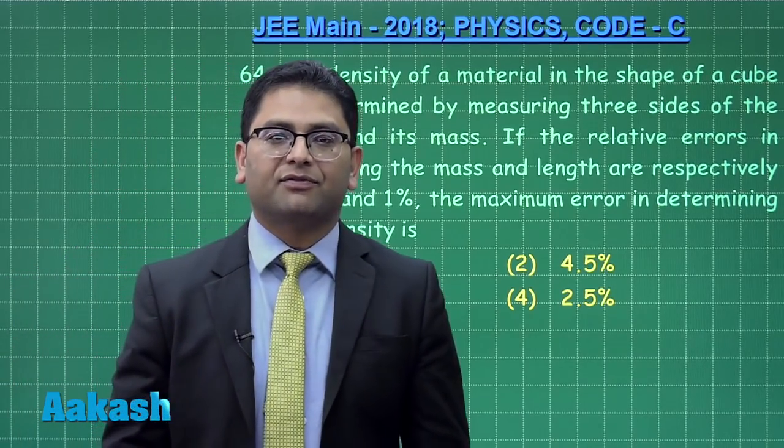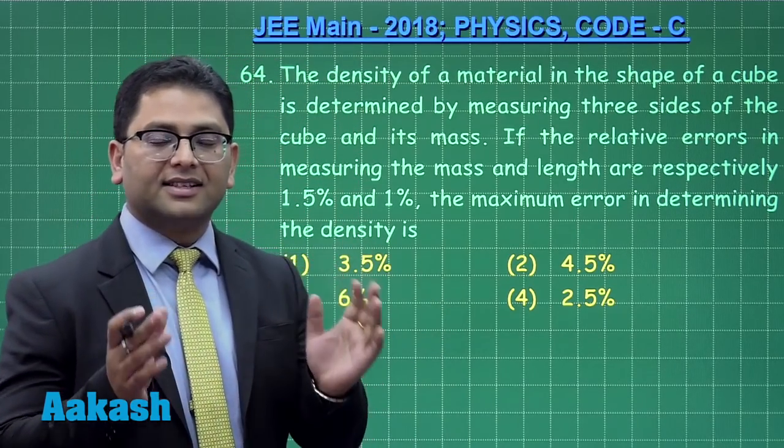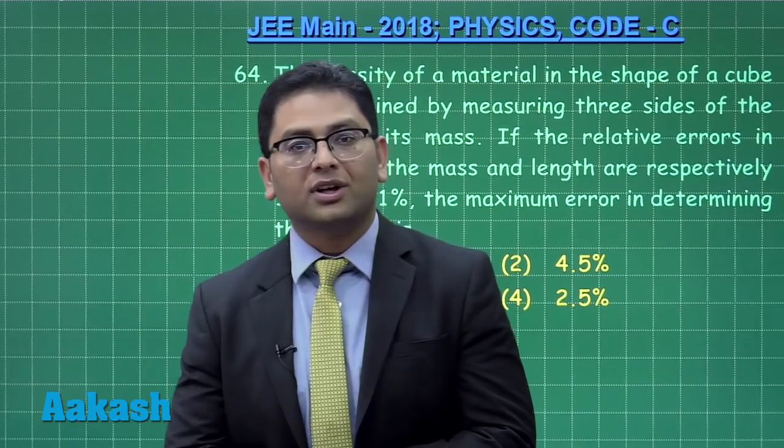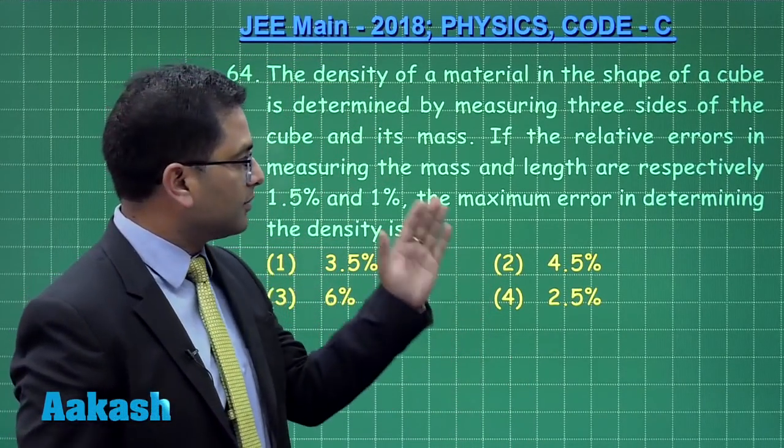Alright, question number 64 is from the topic errors in measurement, and this proves a general rule of thumb that at least one question would always fall from this particular topic.